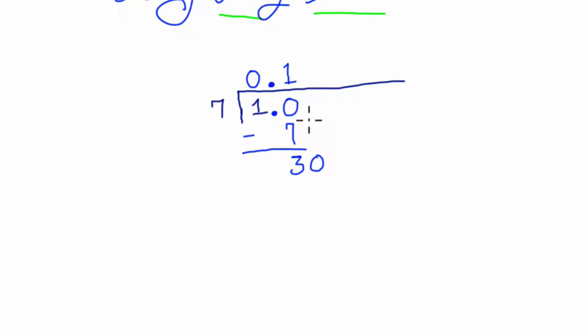7 does not go into 3 evenly, so we carry a 0 down. I'm just going to write it here and here, I guess, so I can line it up. 7 goes into 30 four times, right? 7 times 3 is 21. 7 times 4 is 28.